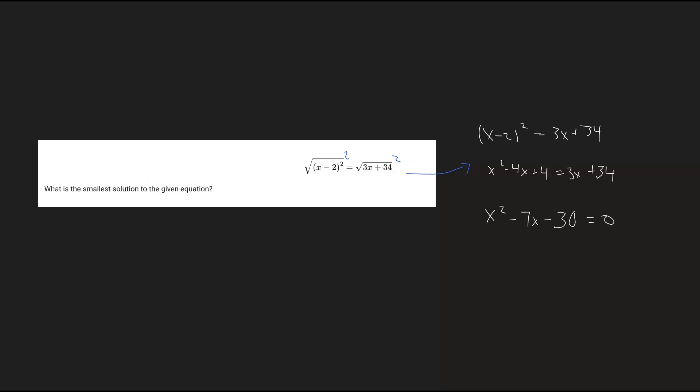Now we can just factor this out. We have x squared minus 7x minus 30. You know the drill: find two numbers that multiply to negative 30 and add to negative 7.